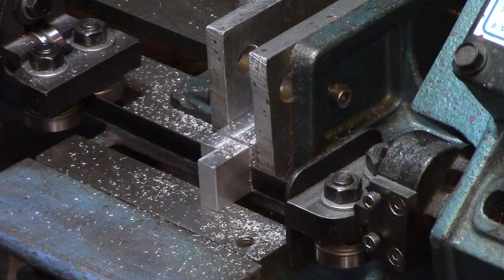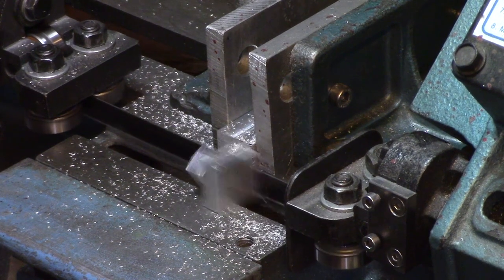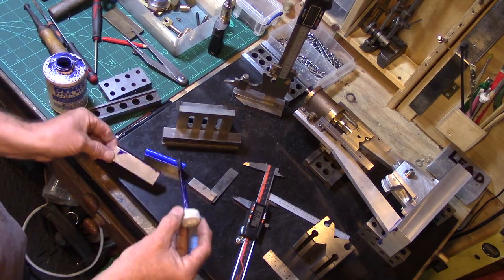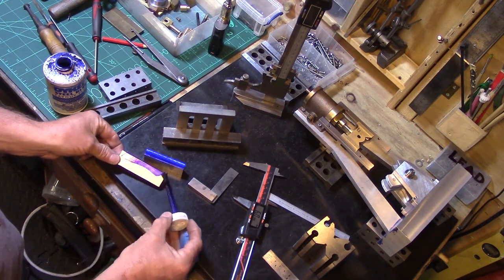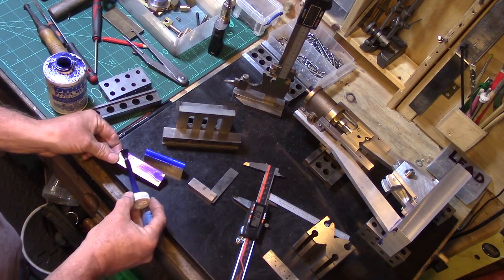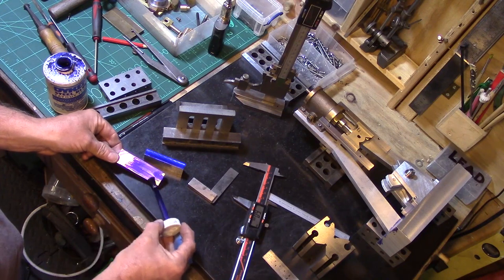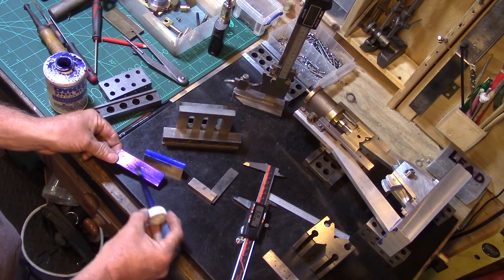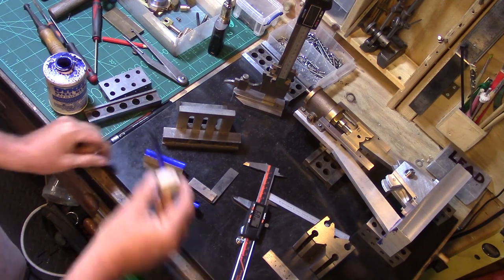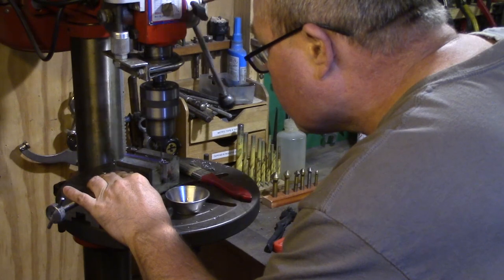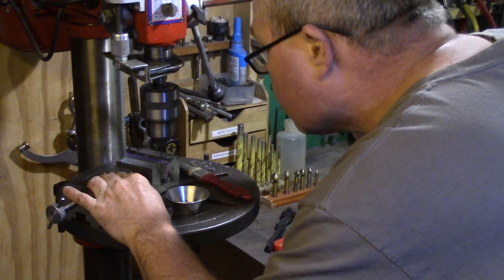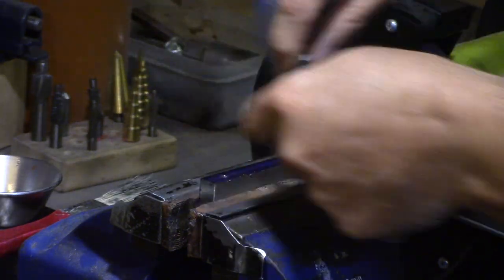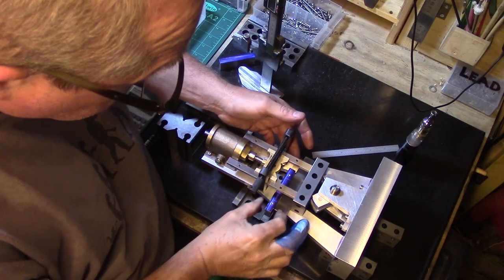These were measured up and cut off on the bandsaw before bluing and marking out on the surface table. Holes were drilled and tapped to correspond to the holes in the guide rails, and then with the use of parallels and clamps the spacers were test fitted for size.